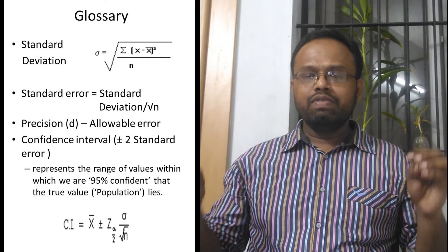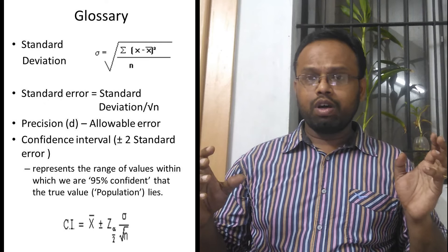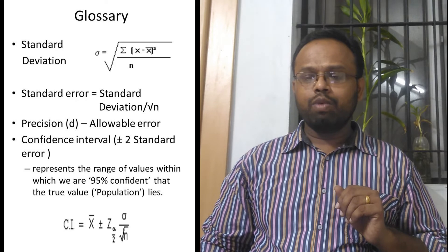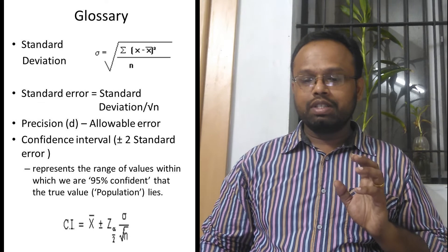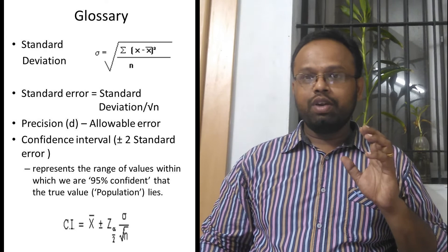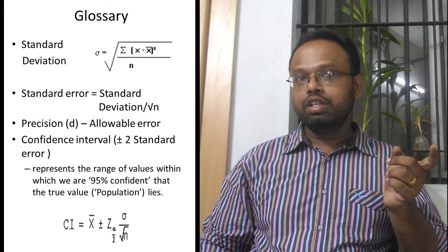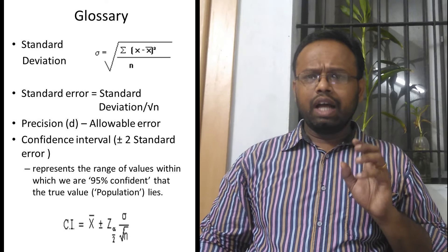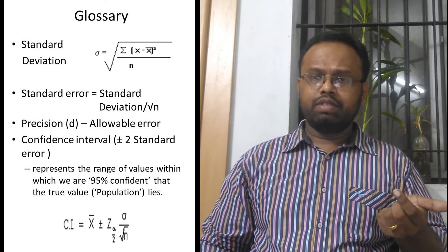Standard deviation — you won't have to remember the formula, but just glance at it. If you see the formula, the sample size n is inversely proportional to the standard deviation. You also calculate a term called standard error for that value by using standard deviation divided by the root of n. Again, standard deviation is inversely proportional to the root of n, giving you the standard error.